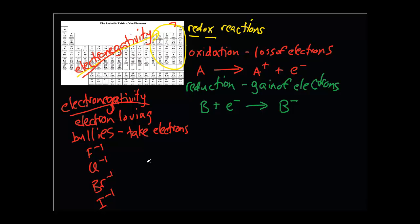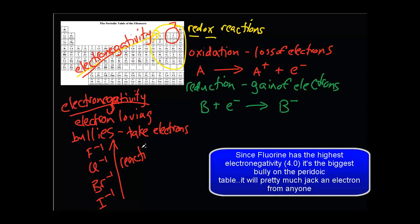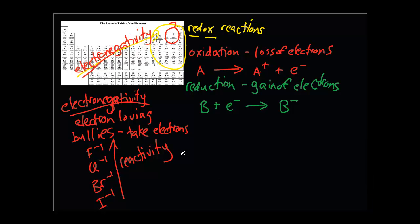In terms of reactivity, fluorine would be the most reactive because it's the most electronegative. It's going to be the biggest bully because it has all that power and strength to grab that one electron from anywhere. Fluorine is a very dangerous element to work with as a result — it can pretty much react with anything to take that one electron. So the reactivity of these guys is going to go up as you go up the periodic table.